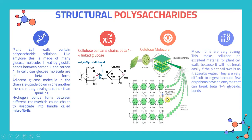You can see the chains that are joined together. Microfibrils are very strong, making cellulose an excellent material for plant cell walls because it will not break easily if the plant cell swells as it absorbs water. Cellulose is very difficult to digest because most organisms lack an enzyme that can break beta 1-4 glycosidic bonds.